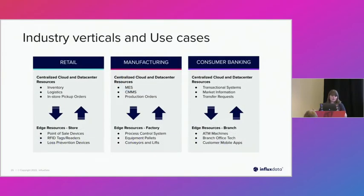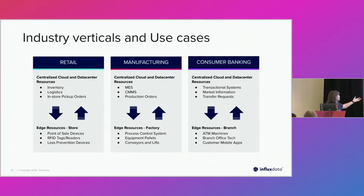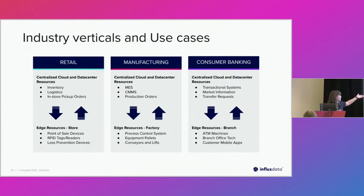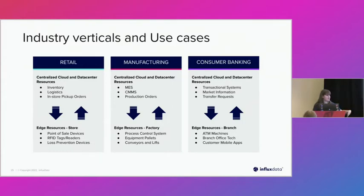These are some industry use cases we discussed when originally developing this. In retail — inside stores, loss prevention devices — you can have intermittent internet connectivity. Manufacturing is often done in remote regions that aren't super well connected. And banks have things like ATMs and customer mobile apps that obviously come in and out of connectivity.